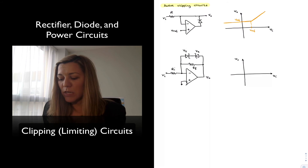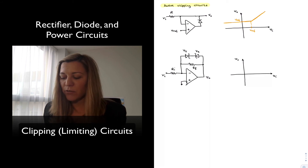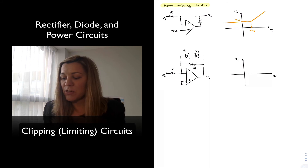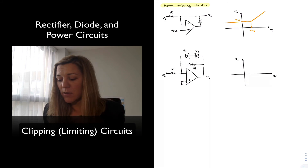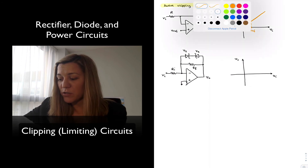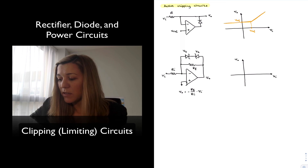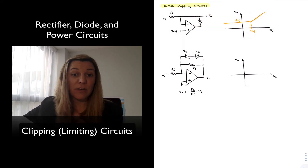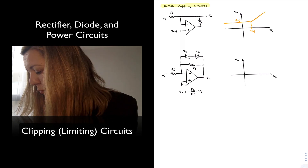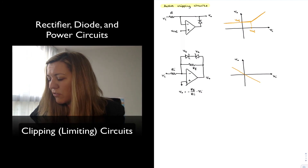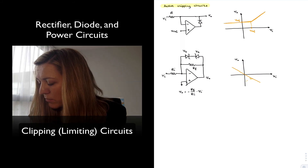Another common clipping configuration is via the use of Zener diodes, as in the second active circuit. Typically this is to set symmetrical upper and lower limits, though they don't have to be symmetrical if you choose Zener diodes with different Zener voltages. Notice this is just an inverting amplifier, so VOUT is equal to negative RF over RI times VIN. The voltage transfer characteristic of VOUT versus VIN has a negative slope — VOUT goes negative for positive values of VIN and positive for negative values of VIN, with a slope of negative RF over RI.